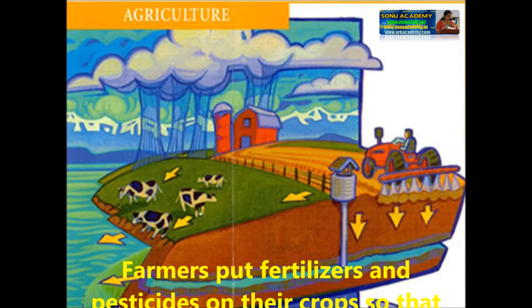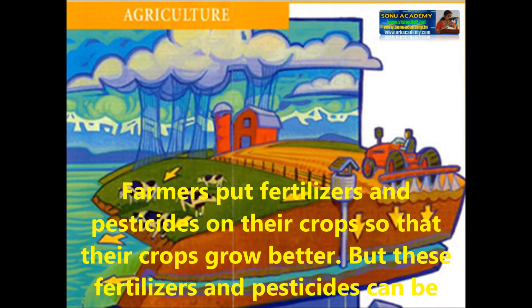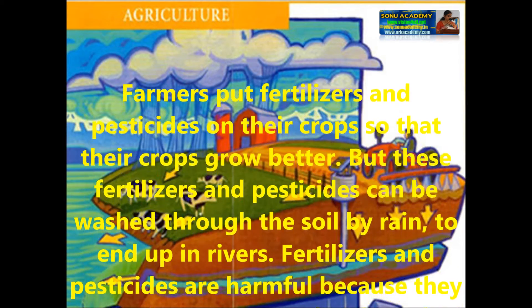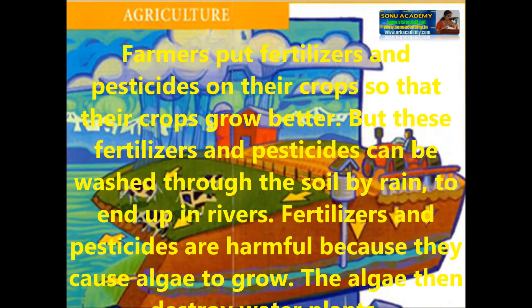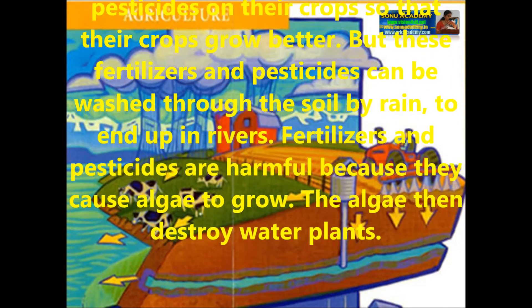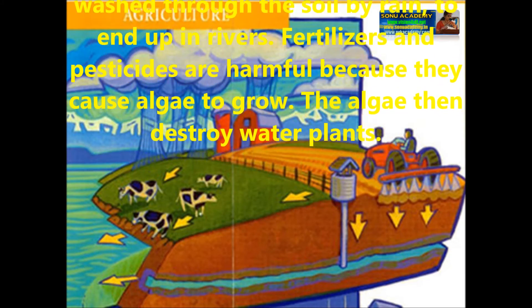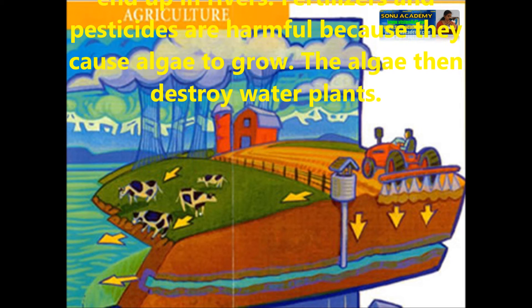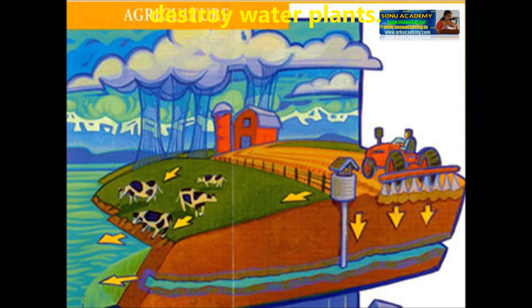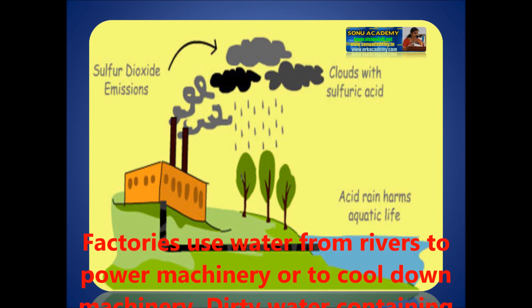The second cause of water pollution is agricultural. Farmers put fertilizers and pesticides on their crops so that their crops grow better. These fertilizers and pesticides can be washed through the soil by rain and end up in the rivers. Fertilizers and pesticides are harmful because they cause algae to grow, and the algae can destroy water plants. Another reason for water pollution is factories.